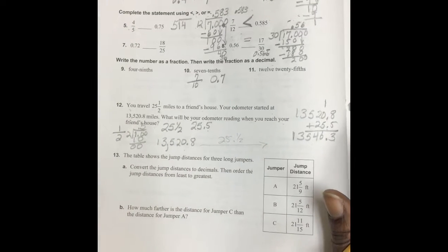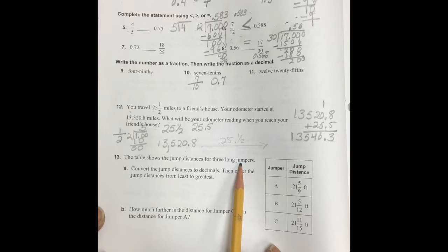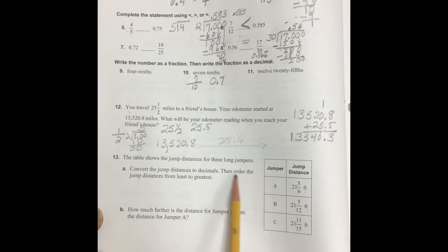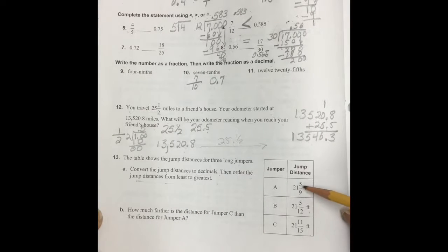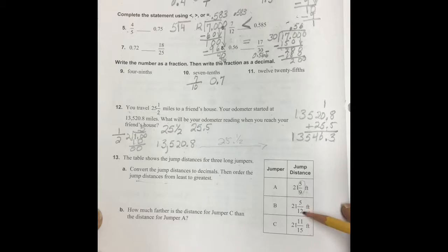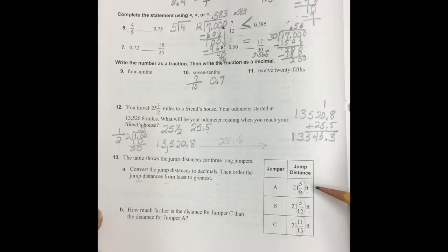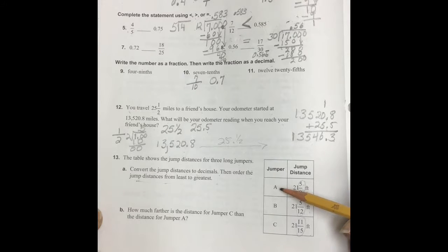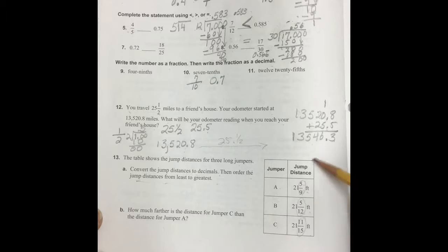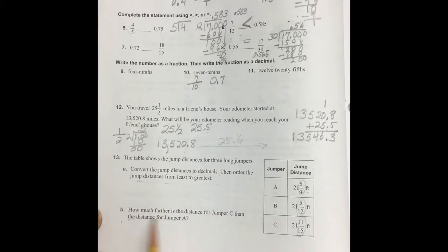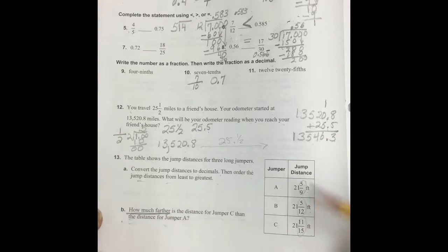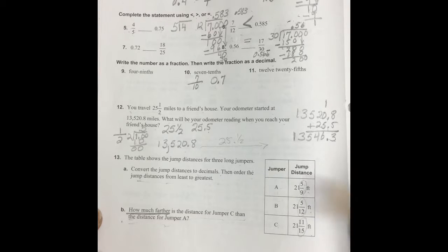All right. Let's look at number 13 to give you a little help. Table shows jumping distance for three long jumpers. Here they are. Convert the jumping distance to decimals. Then, order the jumping distance from least to greatest. So, once you take the fractional amount and convert it to a decimal, then you have your whole plus your decimal. And then, you can compare to see which order they should be in. Whether it's ABC, CBA, or so on and so forth. And then, here it says, how much farther is the distance for jumper C than the distance for jumper A? So, in a case like that, because you're saying how much farther, then you are going to do a comparison, which means you will subtract to get the difference between the two.